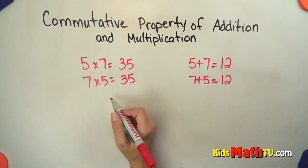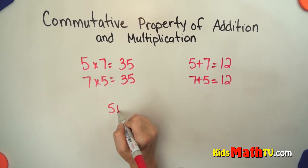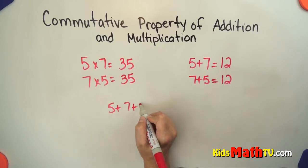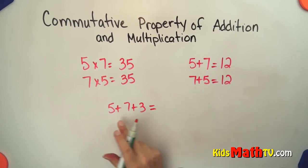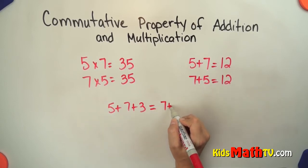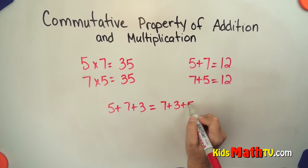Let's do one more, a little bit more challenging. If we have maybe 5 plus 7 plus 3, that should be the same as if I change the order. So let's say 7 plus 3 plus 5. Let's check to see if that works.